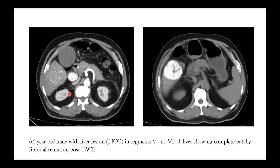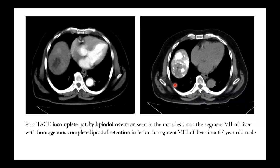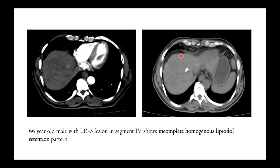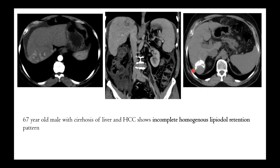Here we can see a 64-year-old male with an HCC lesion in segments 5 and 6 showing complete patchy lipiodol retention post-TACE. Another case shows incomplete patchy lipiodol retention in a large lesion, whereas a smaller lesion adjacent to it shows complete homogenous lipiodol retention. A 66-year-old male with an LR5 lesion shows incomplete homogenous lipiodol retention. A 67-year-old male with cirrhosis and HCC shows an incomplete homogenous lipiodol retention pattern.